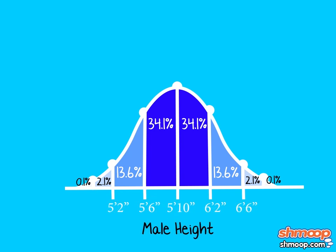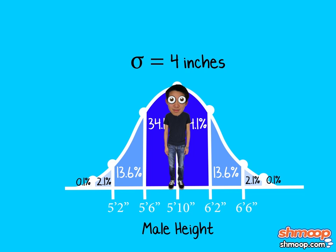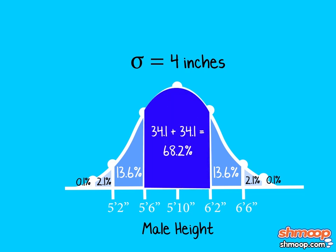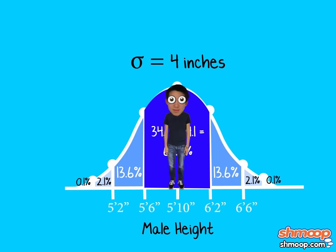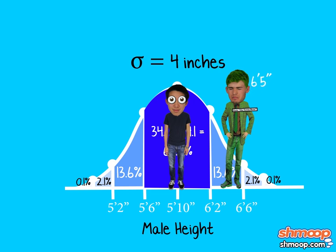Take male height, for example. The average height of an adult male is 70 inches, or 5'10", with a standard deviation of 4 inches. That means that 68.2% of all males are within 4 inches of 5'10". These guys are considered normal — that's normal from 5'6" to 6'2". Unfortunately for Gene, at 6'5", he falls two deviations away from the average. The second deviation from either side of the midpoint makes up 27.3% of the area under the curve.